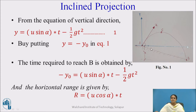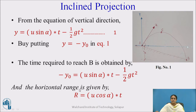Here, the strike point is below the point of application. So we consider y = −y₀, because it is below the starting point or below the original level. The time required to reach station B is given by: −y₀ = u·sin(α)·t − ½g·t². The horizontal range is given by r = u·cos(α)·t, where u·cos(α) is the horizontal component of the inclined projectile.